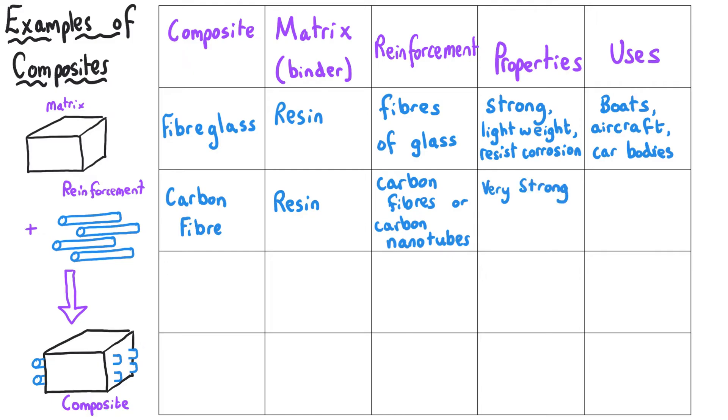And carbon fiber is an extremely strong material and normally very lightweight and stiff. And as a result of those properties, the composites are useful for aerospace, sports equipment, and high performance vehicles as well.